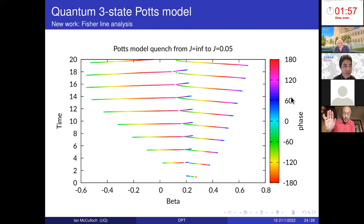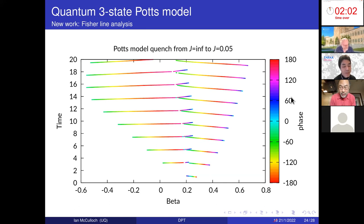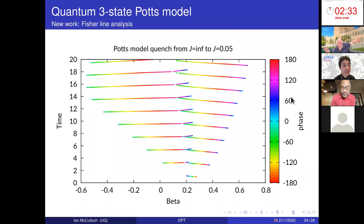[Q&A on MPS with complex numbers]: Is there any additional difficulty in treating complex numbers rather than real numbers in MPS numerical operations? Not really. When we do infinite MPS, we tend to use complex numbers anyway, even if we expect everything to be real, because the manifold of real MPS is actually discontinuous — there are real MPS that you can't continuously transform using purely real numbers. So we generally use complex numbers, and I don't know of any particular problems; it actually makes things easier.